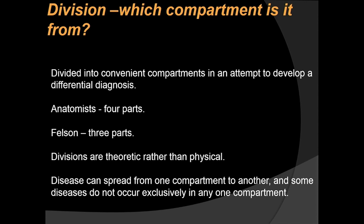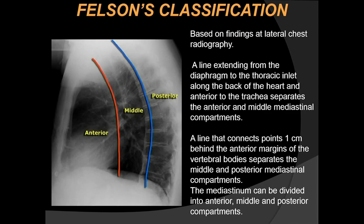Once we've decided a lesion is mediastinal, it is important to place it into a compartment. There have been many classifications; the anatomy is divided into four parts, but Felson's classification, mainly based on the lateral chest radiograph, divides it into three parts. These divisions are theoretical rather than physical, and disease can spread between compartments. Felson's classification uses two lines on the lateral radiograph: one from the diaphragm to the thoracic inlet along the back of the heart separating anterior from middle mediastinum, and a second line one centimeter beyond the anterior vertebral margin separating middle from posterior mediastinum.